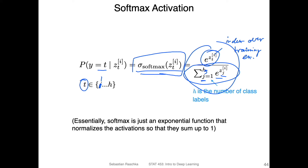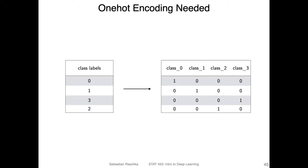Now let's talk about the loss function. Before we can talk about the loss function, there's one more thing we have to talk about: the one-hot encoding, which is an encoding scheme for categorical variables. We can also apply this to the class label variable. You can use it in different contexts — you've probably seen it in the context of traditional machine learning — but we can also apply this one-hot encoding scheme to the class label vector, which is essentially also a categorical variable.